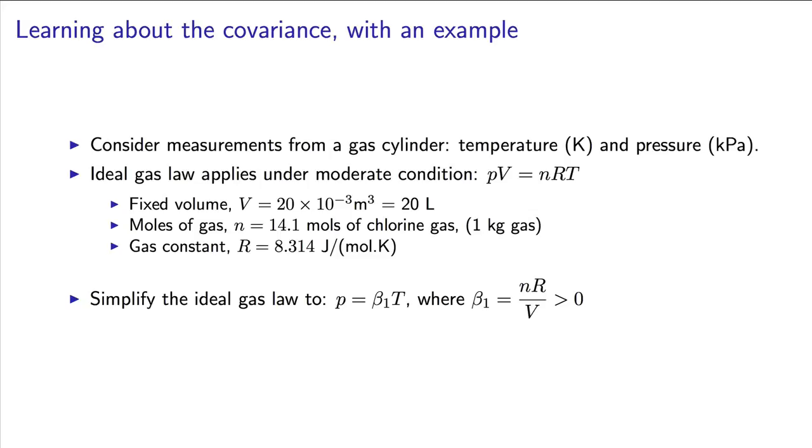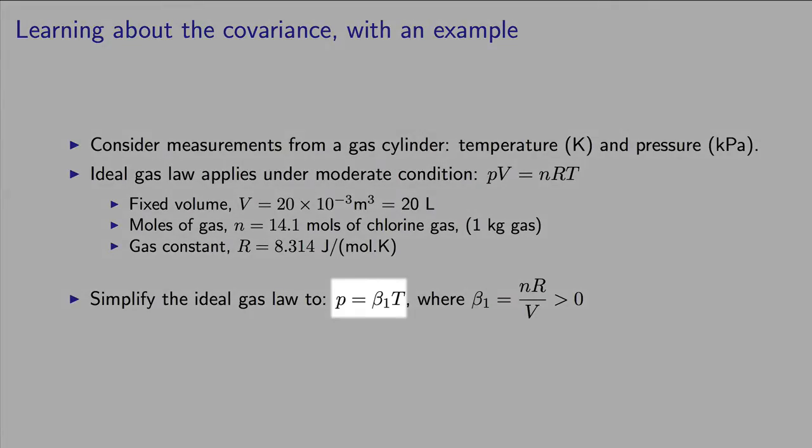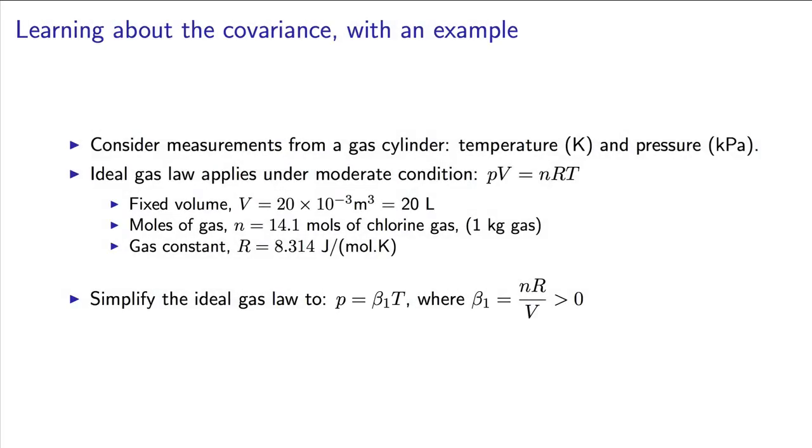By simplifying that equation, we can collect the constant terms in this parameter, beta1, which we know to be a positive coefficient. We can see then that the pressure and the temperature will have some sort of relationship.